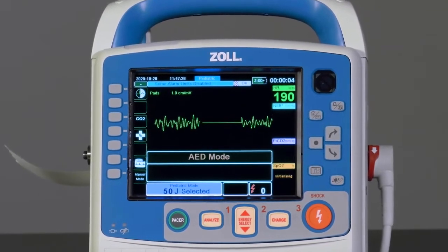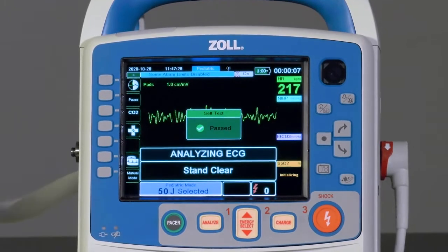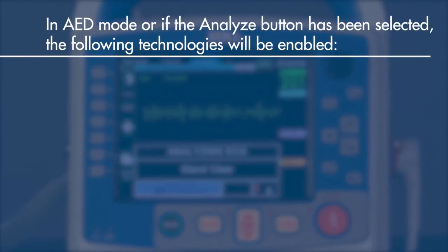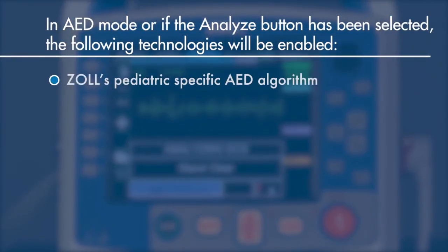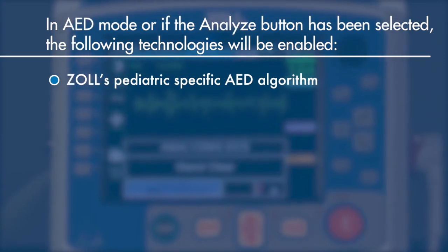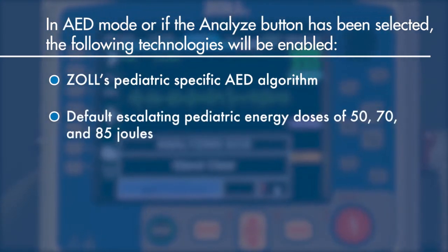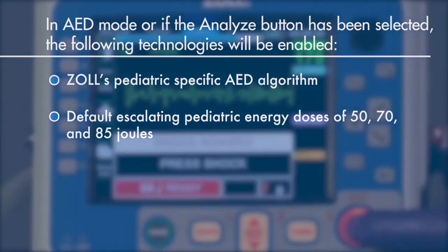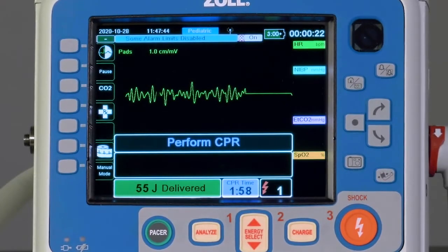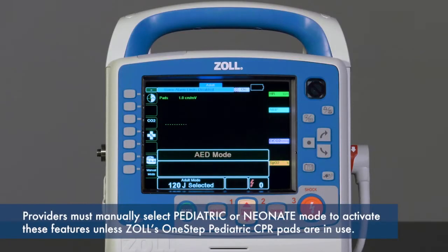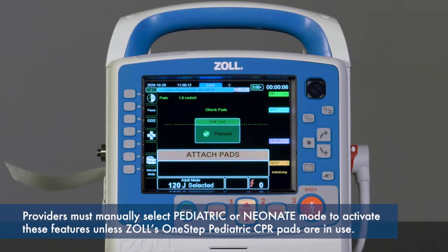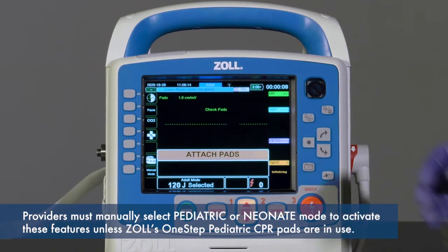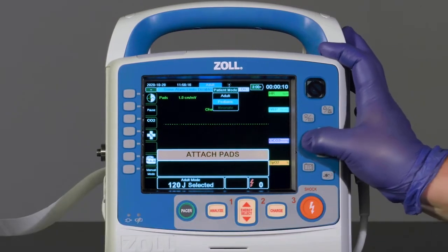If the X-Series Advanced is being used in AED mode, or if the analyze button has been selected, it will automatically enable ZOLL's pediatric-specific AED algorithm and default escalating pediatric energy doses of 50, 70, and 85 joules. It is important to note that providers must manually select pediatric or neonate mode to activate these features, unless pediatric one-step CPR electrodes are in use.